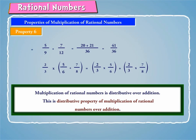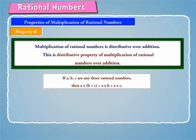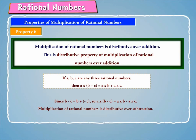Hence, multiplication of rational numbers is distributive over addition. This is the distributive property of multiplication of rational numbers over addition. Thus, if A, B, C are any three rational numbers, then A into (B plus C) is equal to A into B plus A into C. Since B minus C equals B plus (minus C), so A into (B minus C) equals A into B minus A into C. Hence, multiplication is also distributive over subtraction.